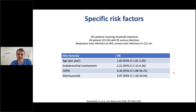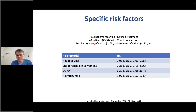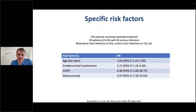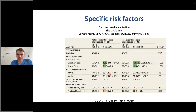We looked at rituximab-treated patients, including almost 200 patients who received rituximab either as induction or maintenance treatment. Roughly 25% had a serious infection, mainly driven by lower and upper respiratory tract infections, followed by urinary tract infections. Age emerged as an independent risk factor, but disease manifestations such as severe lung involvement and previous comorbidities such as COPD also emerged as risk factors. Alemtuzumab — a treatment we no longer give — also emerged as a risk factor.